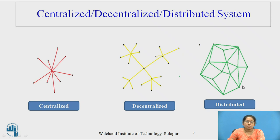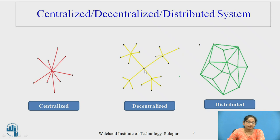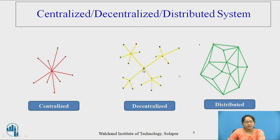In distributed systems, each node works as an authority — it is decentralized to a higher extent. In decentralized, each authority maintains a set of data or available copies of data, so if one point or one node fails, there is no problem as the data is still available. Distributed is a subset of decentralized, and the decision is taken depending on the aggregate of node decisions.